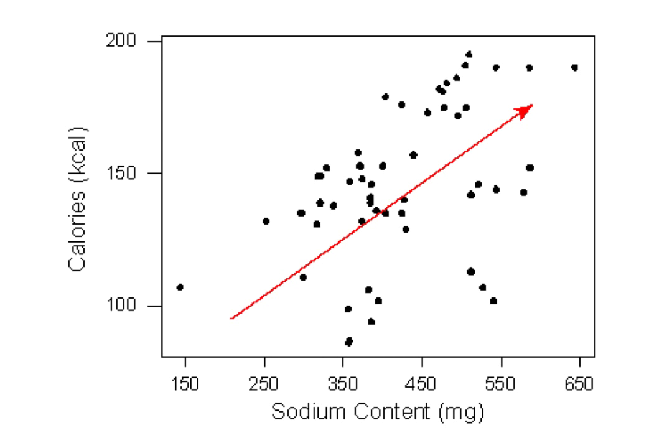The scatterplot displays a positive relationship, which means that hot dogs containing more sodium tend to be higher in calories. The form of the relationship, however, is kind of hard to determine, but maybe if we label the scatterplot indicating the type of hot dogs, we might get a better understanding of the form.